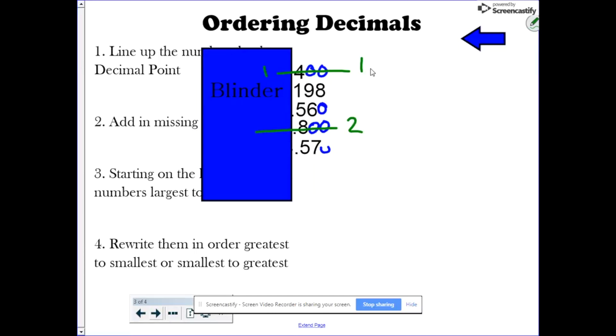Then, we have 198, 560, or 570. What's the largest number there? Well, next is the 570, so I'm going to write a 3 next to it. Then, 560, and we'll write a 4. And finally, 198, I'm going to write the 5.